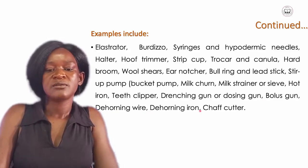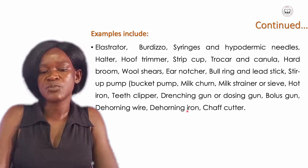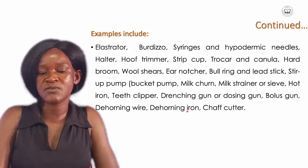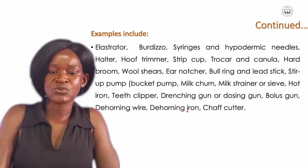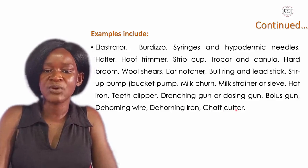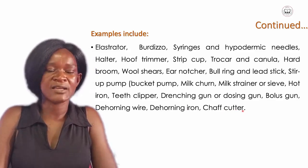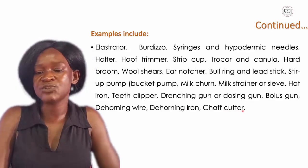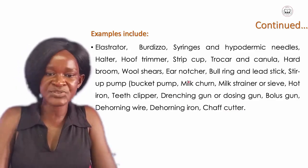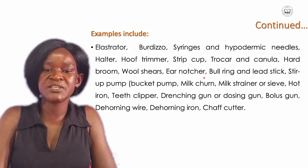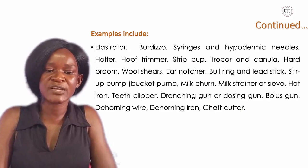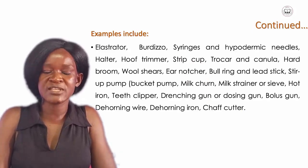Dehorning wire and dehorning iron are used to trim the horns so they are not pointed, to avoid causing harm to fellow animals and farmers. The chaff cutter is used to cut grass to feed the animals. Since these tools and equipments are used to aid livestock production, that is why they are under livestock production tools and equipments. Pictures of the mentioned tools are also displayed.